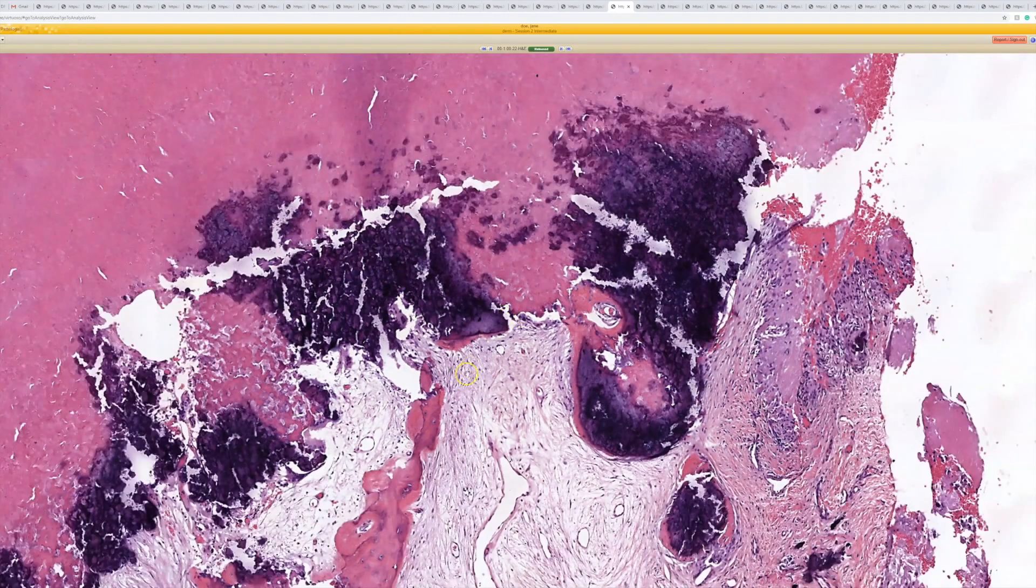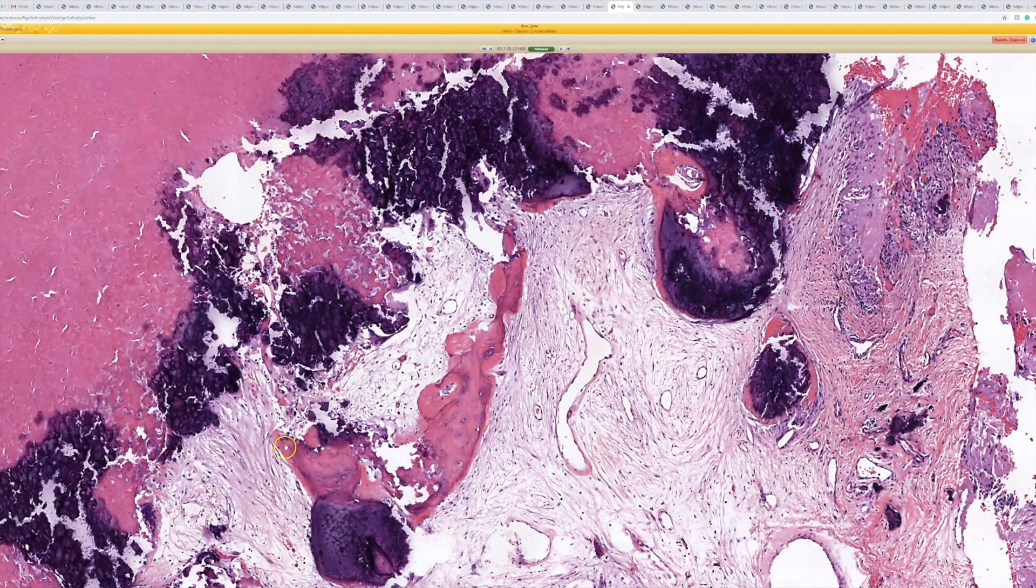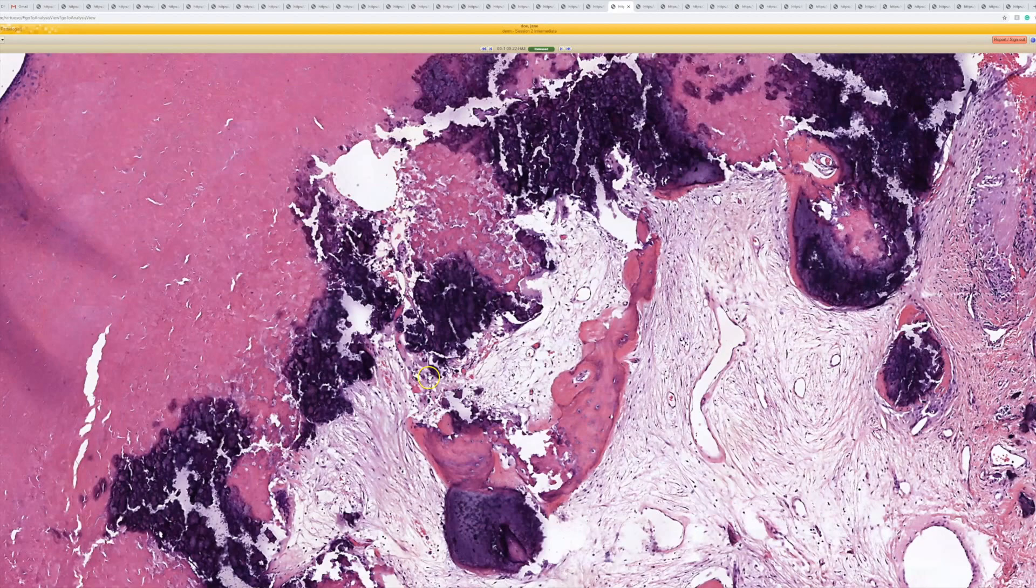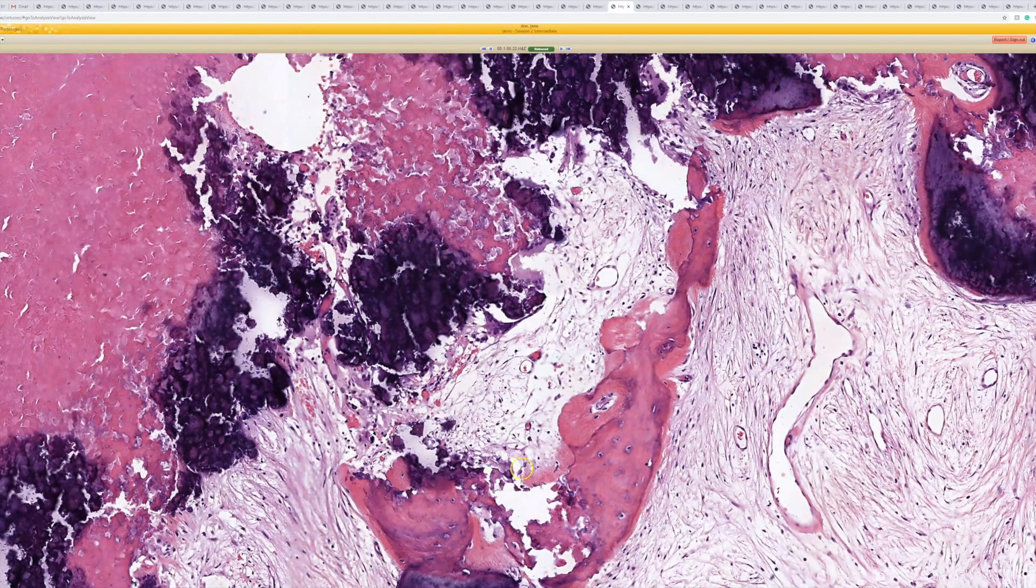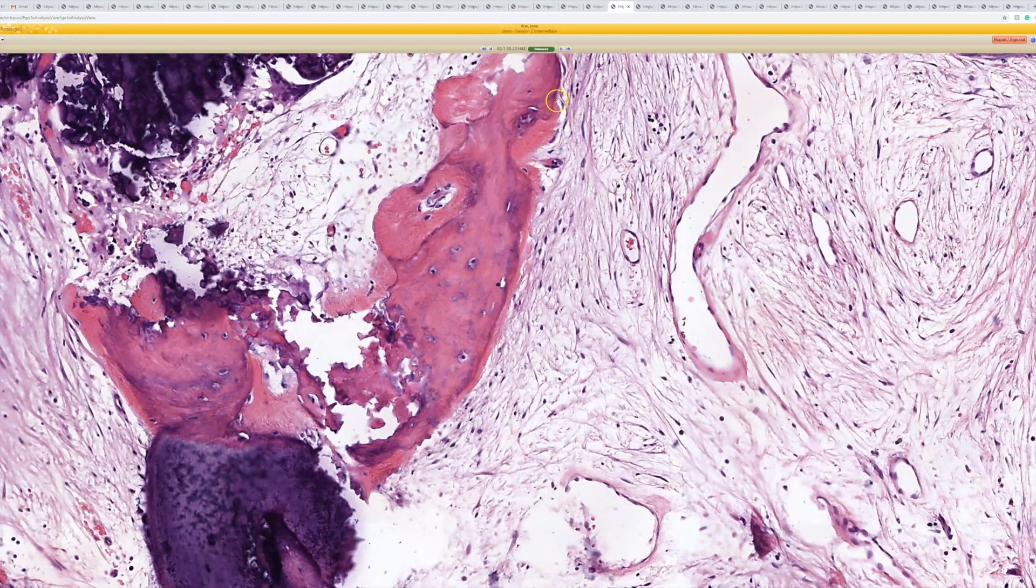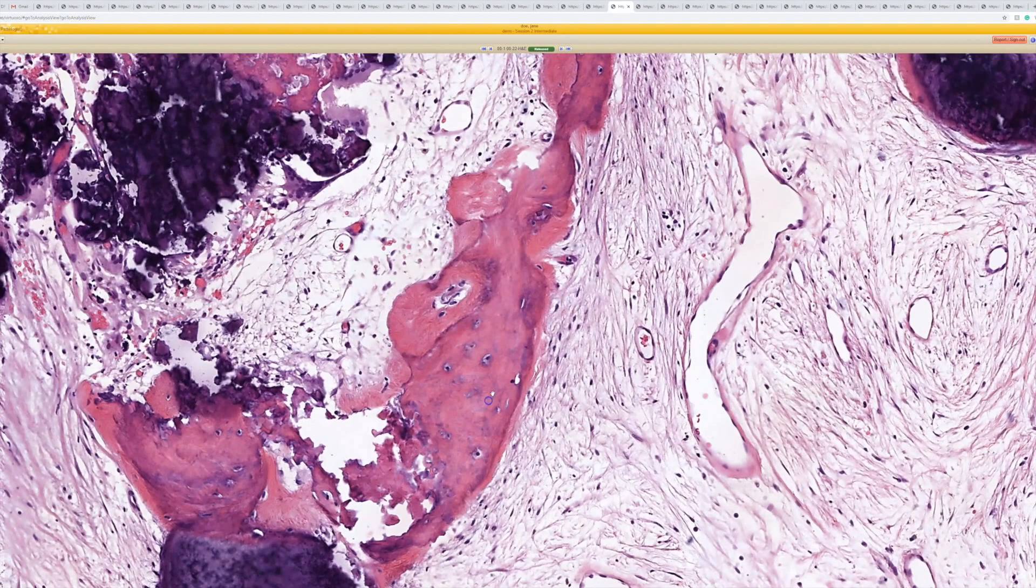And this one has what going on in the middle? It's like some ossification. Yeah, you've got calcification here, the purple stuff, which you often see in pilar cysts. And occasionally you can actually see metaplastic bone formation, which is what we have here.